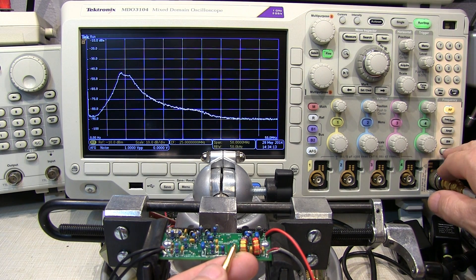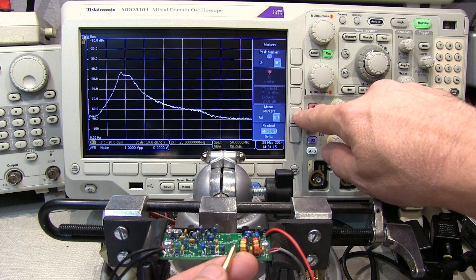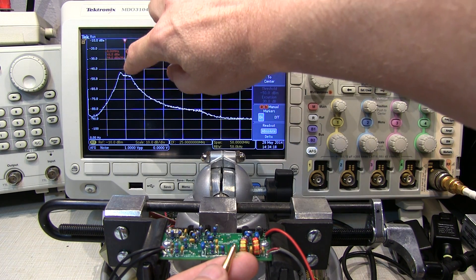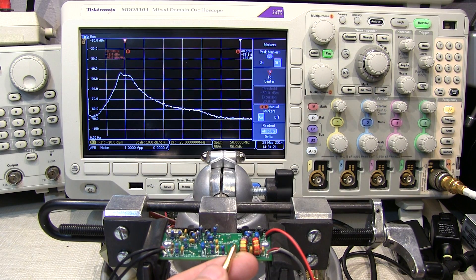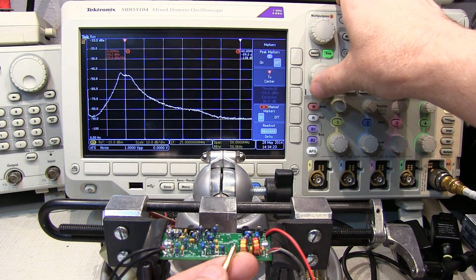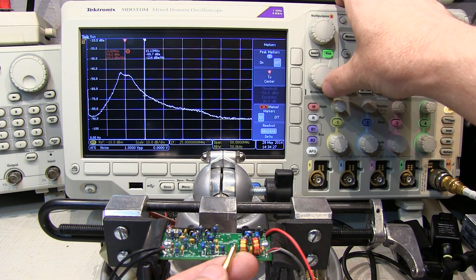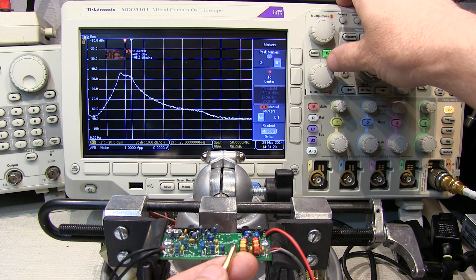So with that filter shape on there, we could throw a couple of manual markers on here. And I've got one marker here centered right at 10 MHz. I can see that's right at the center of the bandpass filter. And I could bring the other marker in here and measure how far down we are on either side of that filter.